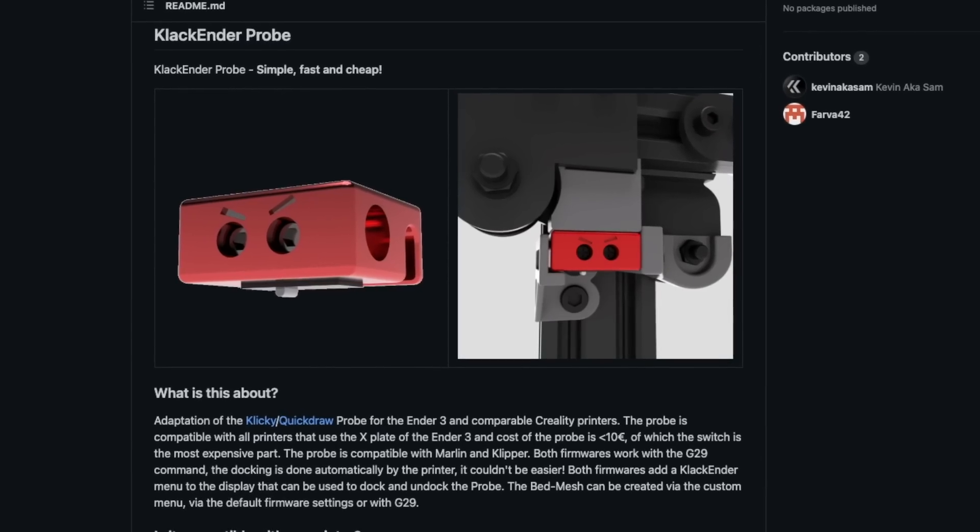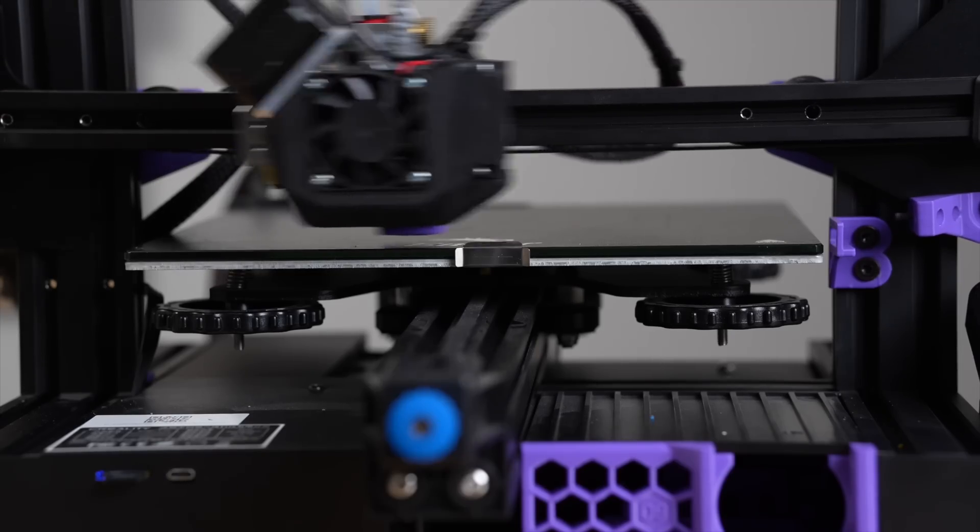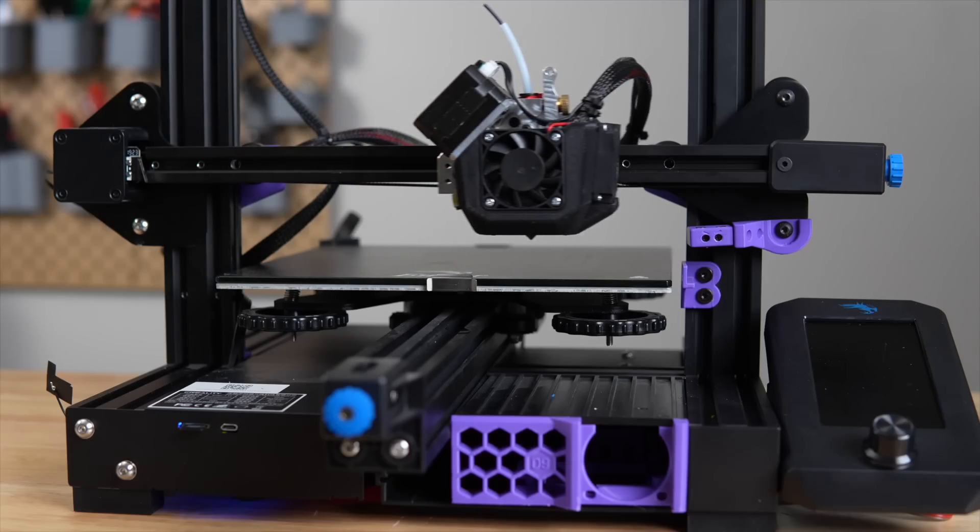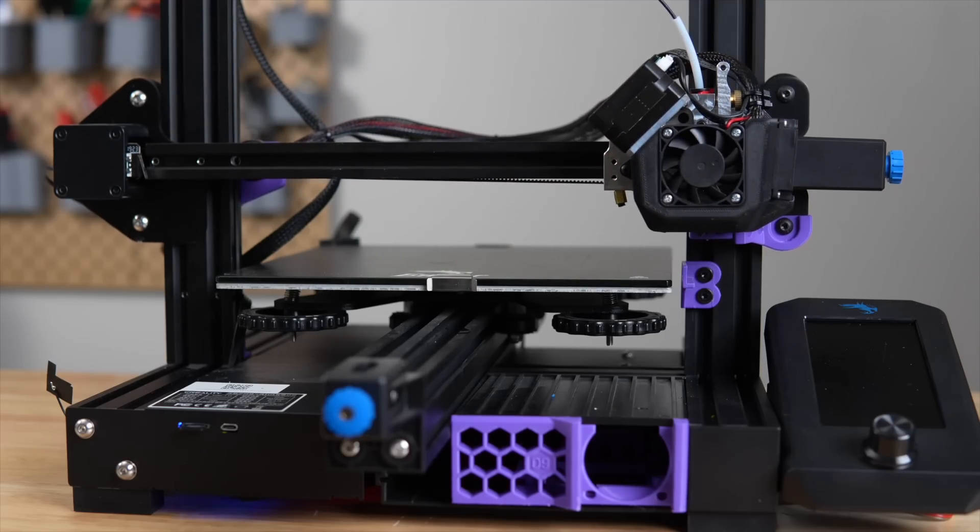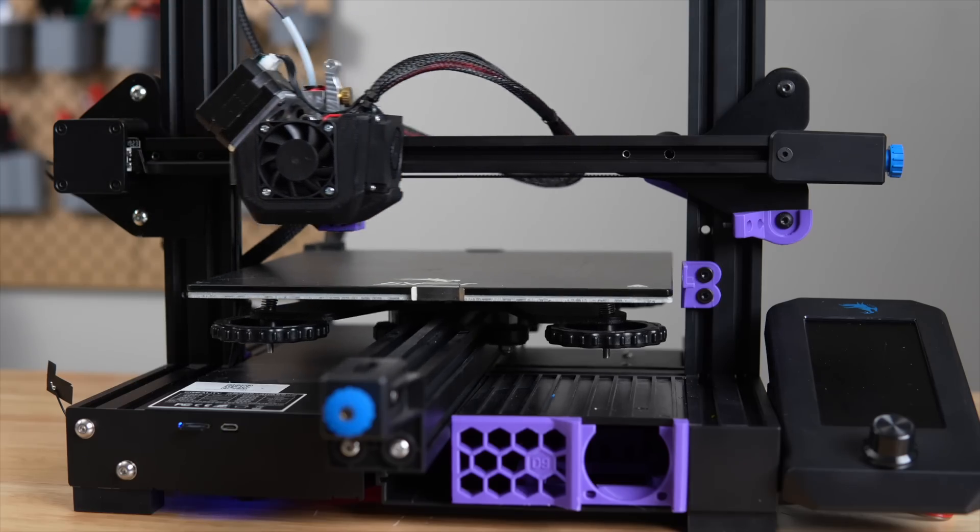That brings us to the Clack Ender. The Clack Ender is an implementation of the Clicky Probe for the Ender 3 or similar Creality type printers. It uses the same Clicky Probe setup with the micro switch and the magnets, but it has been adapted to work specifically with this printer or, again, this style of printer.